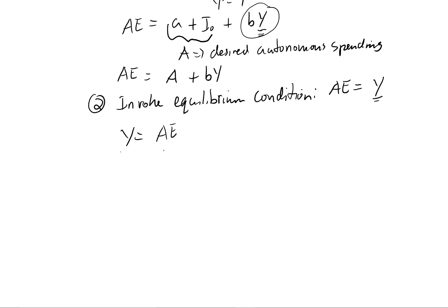And now we just want to plug in what we know about this AE function. So we just solve for it. So you want to plug this in. You want to plug AE equals capital A plus B times Y. We're going to plug it in to the right-hand side. So now we have Y equals A plus B times Y.